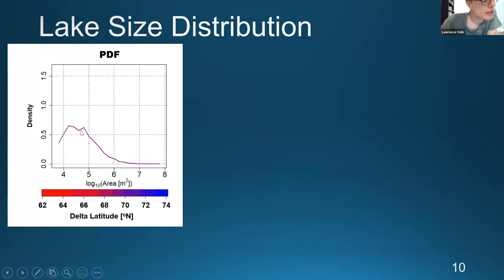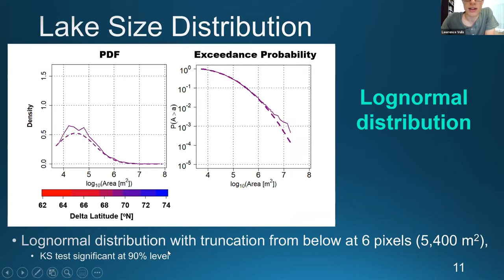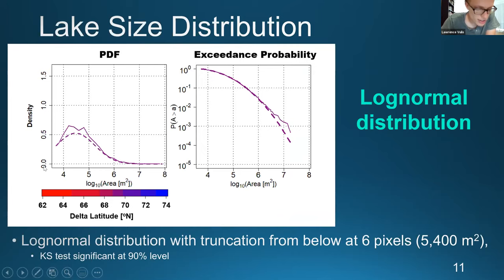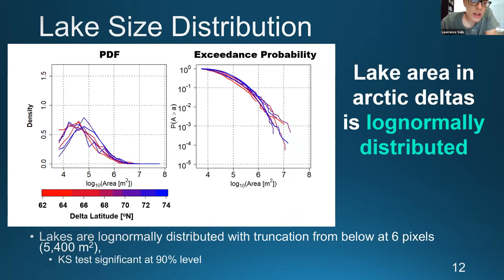Looking at the PDF and exceedance probability, we fit a log-normal distribution and it is significant at the 90% confidence level — there's a truncation parameter since we don't trust water bodies smaller than six pixels. We successfully fit a log-normal distribution on the Kalima. Looking at all seven deltas and all seven exceedance probability curves, all seven deltas have log-normal distributions of lake areas. Once we control for ephemeral water bodies, we detect a log-normal distribution of lake areas on Arctic deltas.